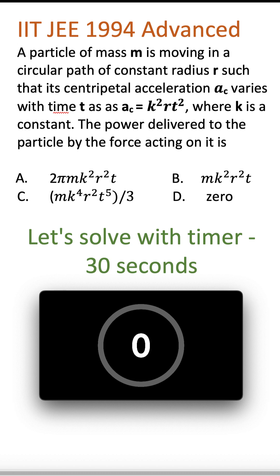So the problem is a particle of mass m is moving in a circular path of constant radius r and the acceleration function is given as k square r t square where r is the radius, constant radius. So r is constant and k is also constant. So the question is power delivered to the particle by the force acting on it. So there is a force acting on it.